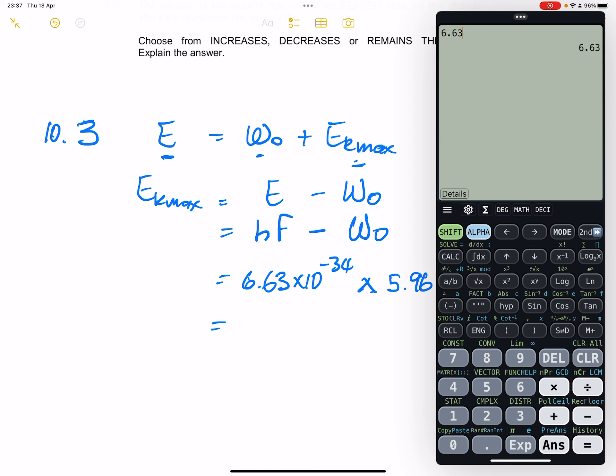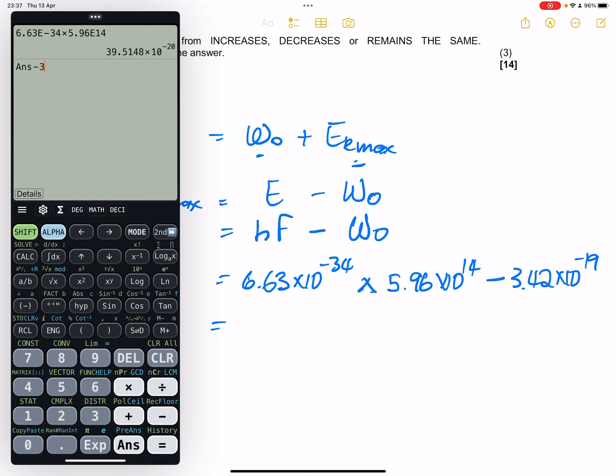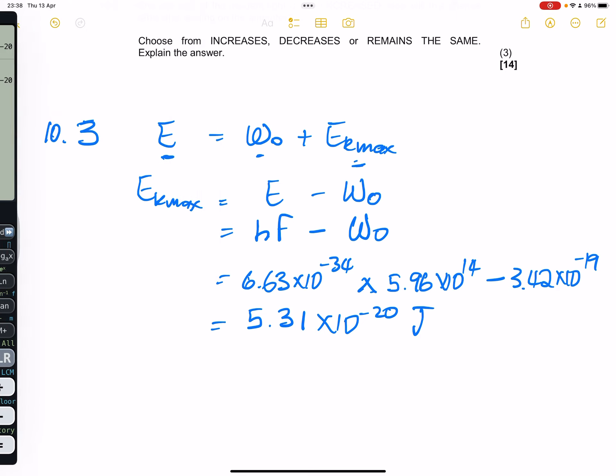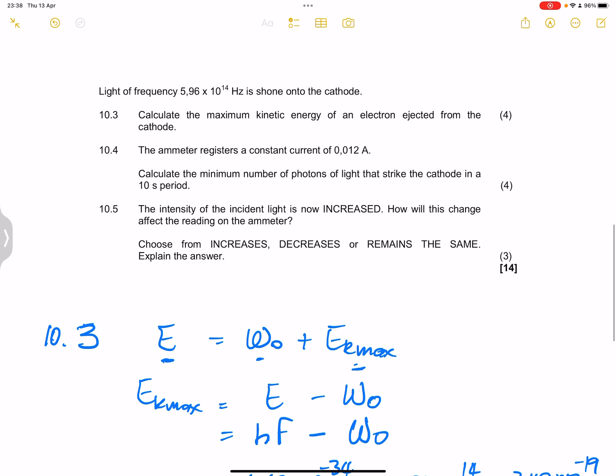So let's try and find out that E k max value. So that's 6.63 multiplied by, let me use that exponent button there, minus 34, and I will get the answer and subtract from that 3.42 exponent minus 19. So I get a value of 5.31 exponent minus 20, and remember that is our kinetic energy, and so energy is measured in joules. Please verify that for me and hopefully we'll get to the same answer.